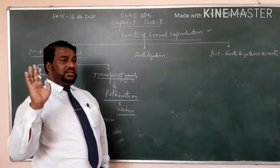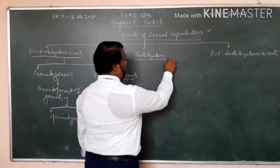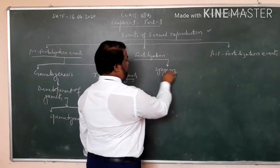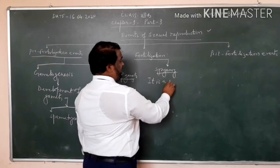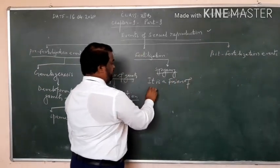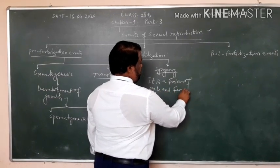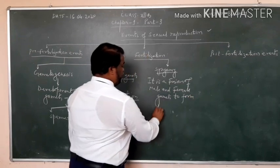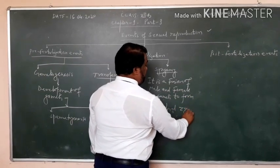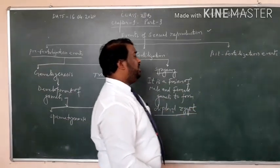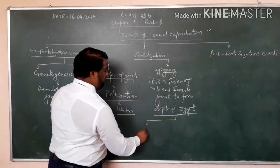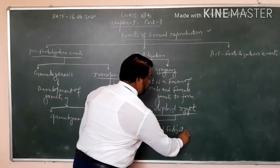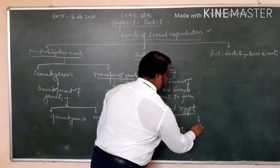After the transfer of gametes, fertilization occurs and this fertilization is also known as syngamy. It is a fusion of male and female gametes to form diploid zygote. Fertilization further divided by two parts, one is external fertilization and another is internal fertilization.